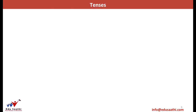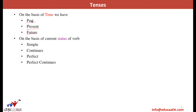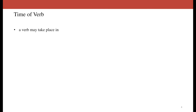We'll elaborate both these concepts. On the basis of time, we may classify the verb as past tense — the work is done — present tense — right now, the days that we are living in — and future tense — the work has to be done, it is not done as yet. On the basis of the status of verb, the verb may be referred to in the simple form, continuous form, perfect form, or perfect continuous form.